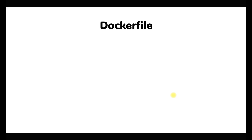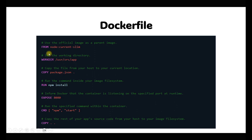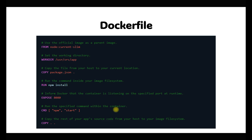Now let's look at the Dockerfile and how it looks in real time. We define the base image, then set the working directory with WORKDIR. We can copy files from the host machine to the current location using COPY, then RUN to install anything we want. We can EXPOSE the application on a specified port number, and once the container starts, run a specified command within it. We can also copy source code from the host machine to the image filesystem.